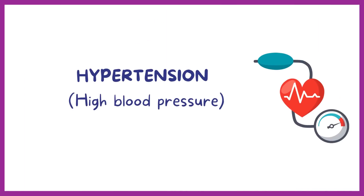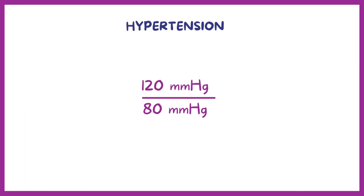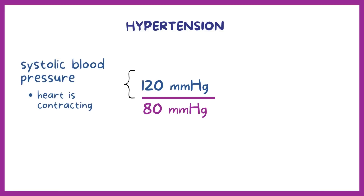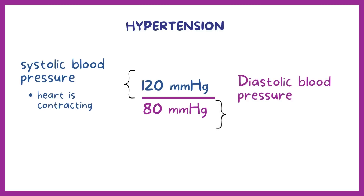Blood pressure is commonly represented by two numbers. The top one represents the systolic blood pressure, which is the arterial pressure when the heart is contracting. The lower number is the diastolic blood pressure, which is the arterial blood pressure when the heart is relaxing.